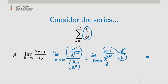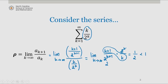If we wanted to show this explicitly, we could use L'Hôpital's rule, but we know that in the long term, k plus 1 over k approaches 1, so this limit is 1 half, which is less than 1. So according to the ratio test, this series converges.